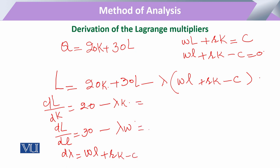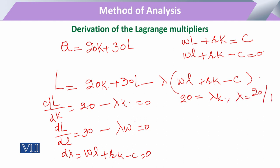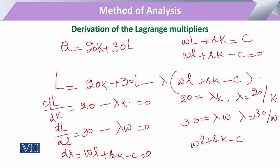Equating these three equations to zero: from the first equation, 20 − λR = 0, so λ = 20/R. From the second equation, 30 − λW = 0, so λ = 30/W. And the third equation gives us WL + RK − C = 0, which is our budget constraint.